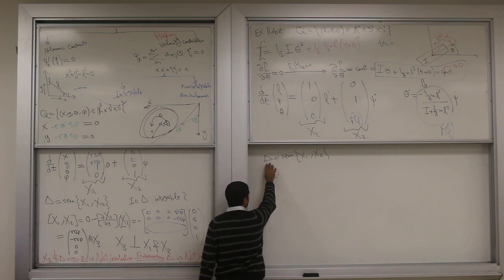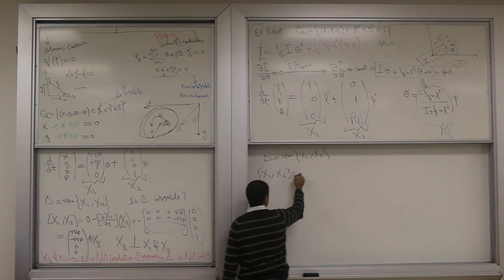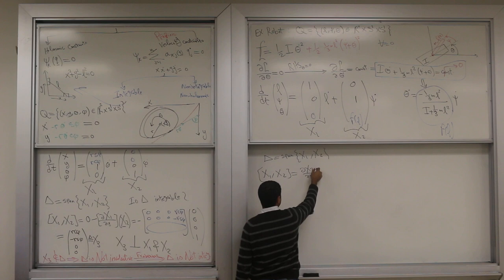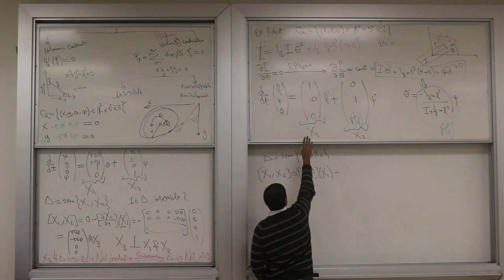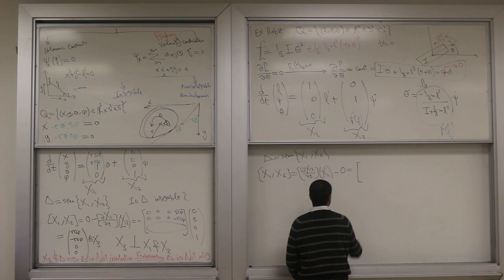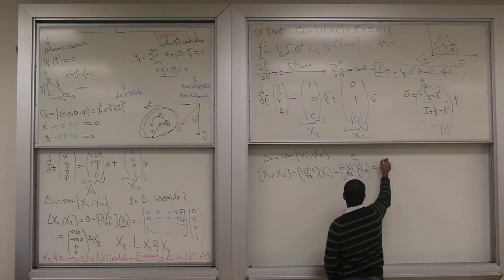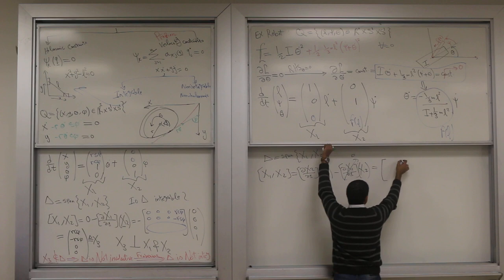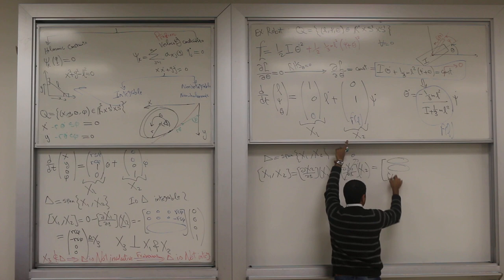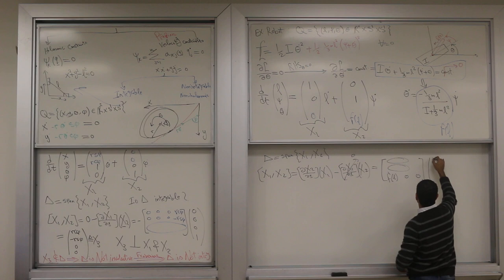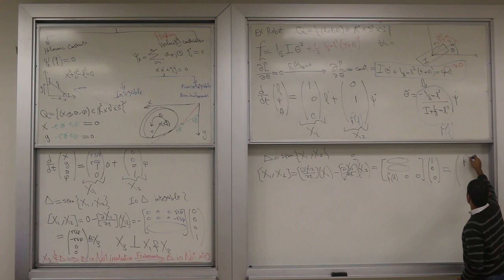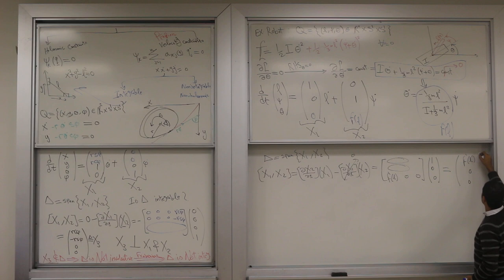How do you do it? I need to check if it's involutive or not. So the Lie bracket between x1 and x2, I need it. Which is partial x2 partial all your coordinates times x1 minus the other way around. x1 is constant, so it's zero. Partial x1 partial x times x2, but this guy is zero because it's constant. So let's differentiate x2 with respect to all the coordinates. This is zero, this is zero, and this guy with respect to L is F prime. Times x1, which is 1, 0, 0.